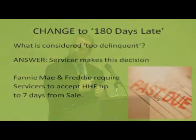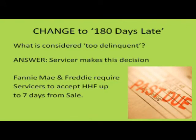Here's another change to eligibility criteria. There was a rule that you cannot be more than 180 days late on your first mortgage. Now it begs the question: how late is too late? What is now considered too delinquent? The answer is totally up to the servicer — the servicer is the one making this decision, and their hands are not tied so they can look at individual circumstances.